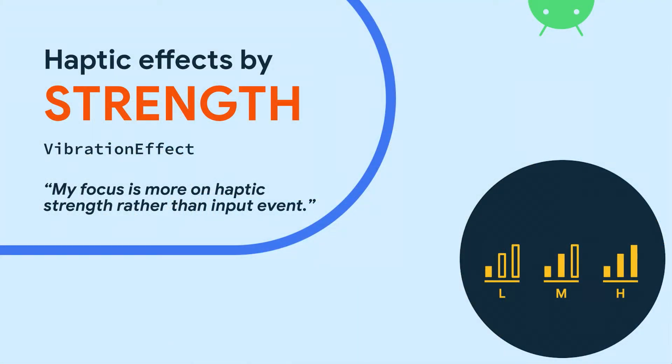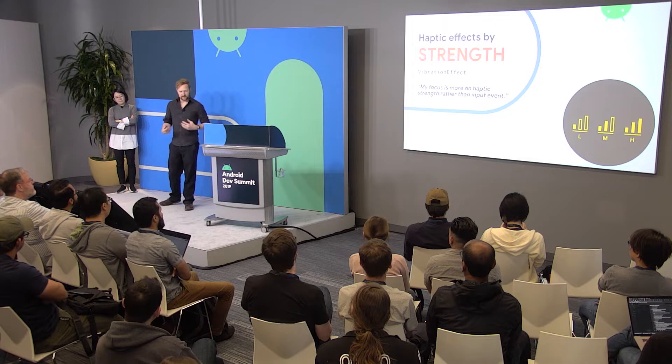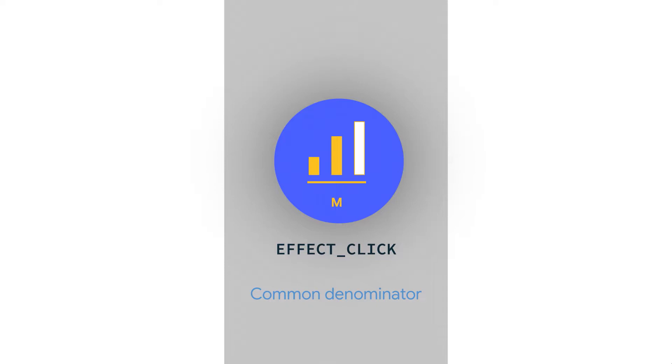Now, there's another API: the VibrationEffect API, and that's through the vibrator service. You want to use this API when you care more about the strength of the haptic rather than the semantic meaning or the gesture involved with it. Another advantage of this API is you can use it without a view — HapticFeedbackConstants requires a view, but this you can call on a background service, in case you're trying to notify the user without a UI. The basic starting haptic we have is EFFECT_CLICK, which is a medium strength haptic — very crisp and nice feeling on modern devices, so we recommend you use that.